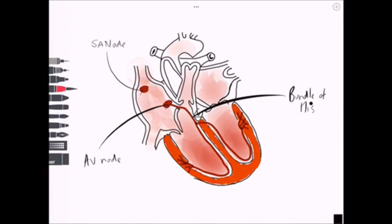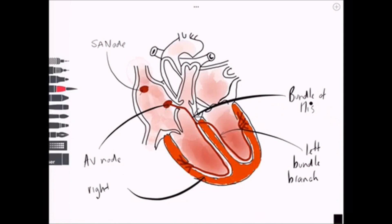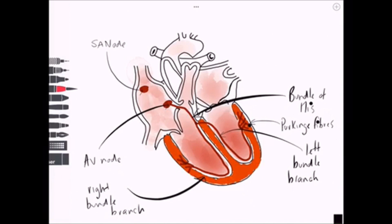From the AV node, conduction leads to the bundle of His fibres that travel to the ventricles, spreading to the left and right bundle branches heading towards the apex of the heart. These fibres double back from the apex to reach the Purkinje fibres, located between the myocardium and the endocardium.